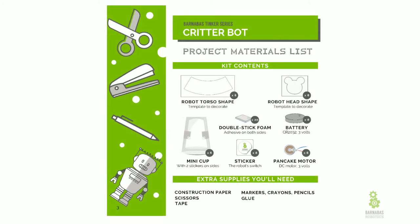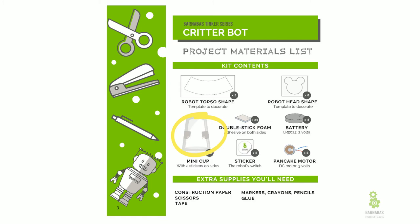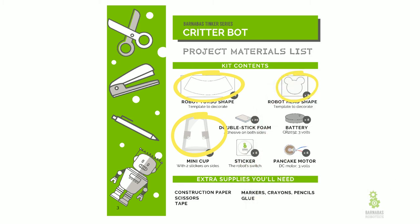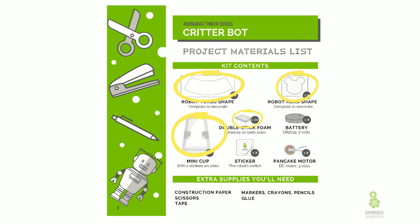We're going to need a few things. We need this cup right here — that's our cup, and it's going to become our body or our torso. Then this torso shape will wrap around our cup. Then we need a head shape — that's going to be where we design our head. And then some sticky foam to stick everything together, and these extra supplies to help us decorate, cut, and build.